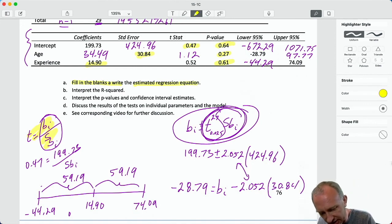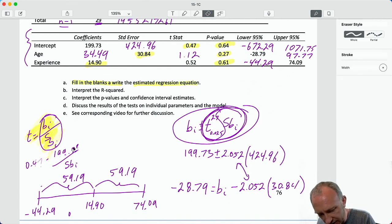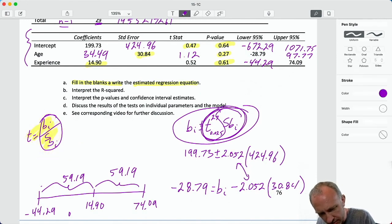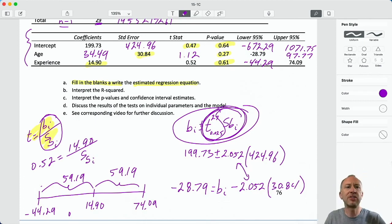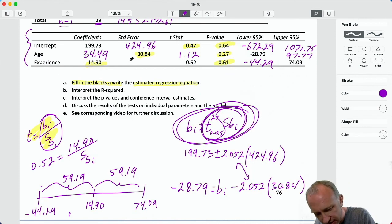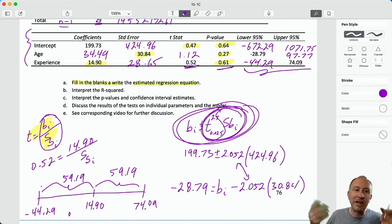Now I need that standard error. I'm going to use this relationship. I have my t-stat is 0.52, which is equal to 14.9 divided by that standard error. I could also use this relationship here to solve for the standard error as well, so I've got options. 14.9 divided by 0.52 gives me 28.65, which is again another large standard error, which is why we have a small t-stat, which is why we have a large p-value, which is why we have an interval that crosses zero. So that's it.